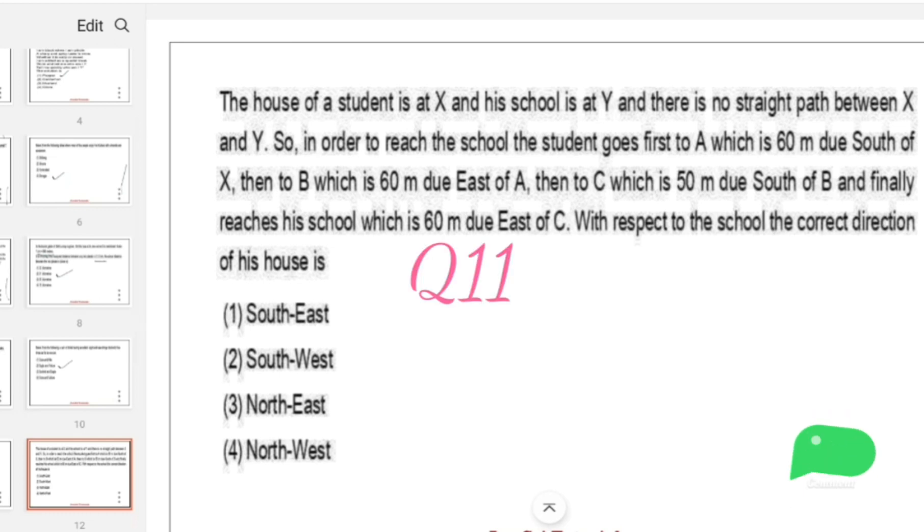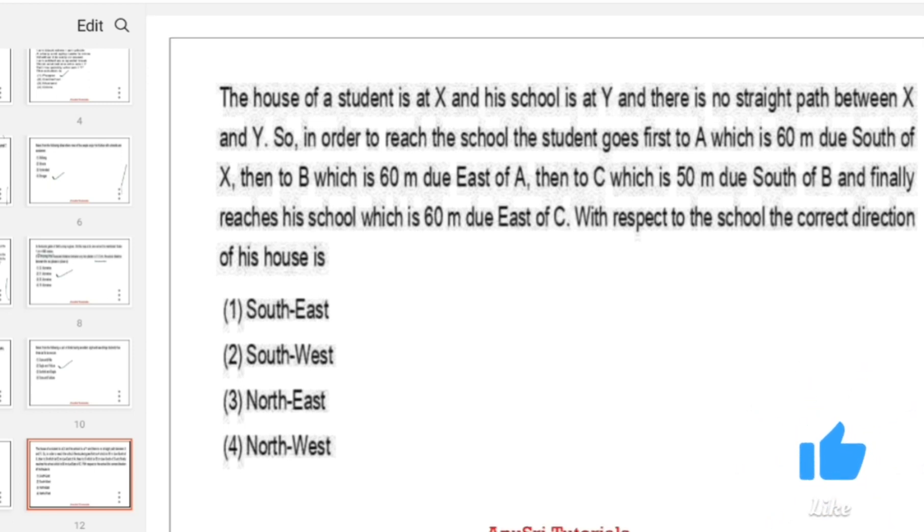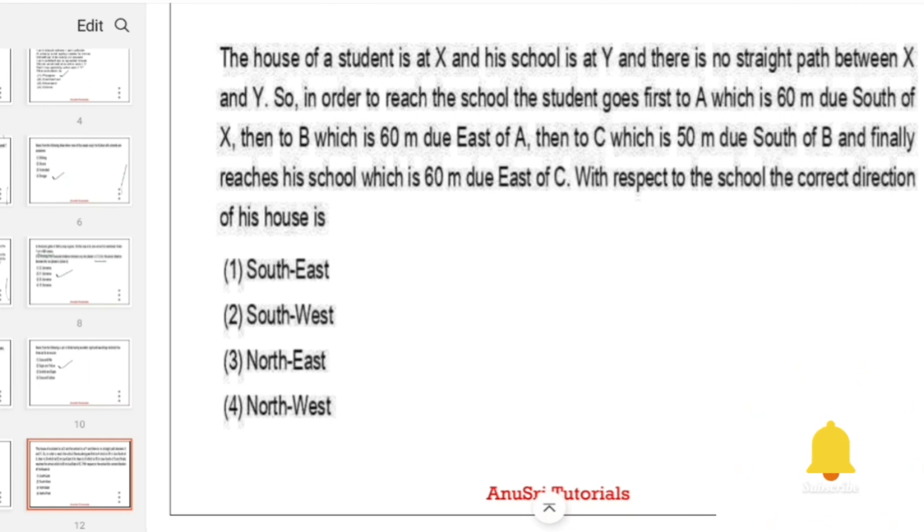The house of a student is at X and his school is at Y, and there is no straight path between X and Y. So in order to reach the school, the student goes first to A which is 60 meters due south of X, then to B which is 60 meters due east of A, then to C which is 50 meters due south of B, and finally reaches his school which is 60 meters due east of C. With respect to the school, the correct direction of his house is northwest.